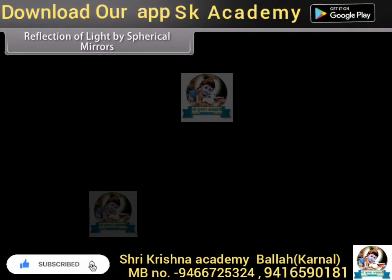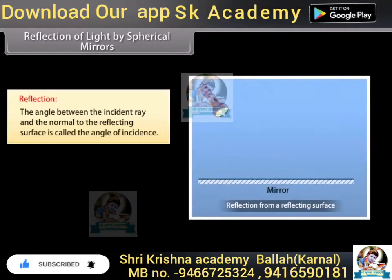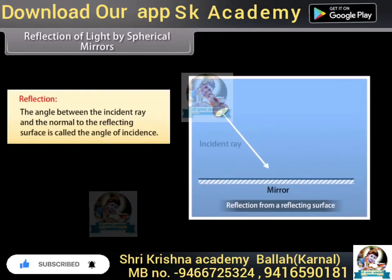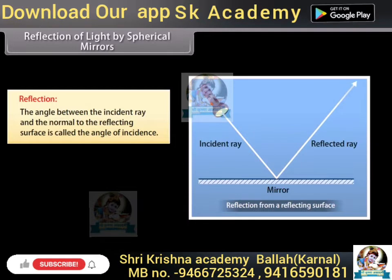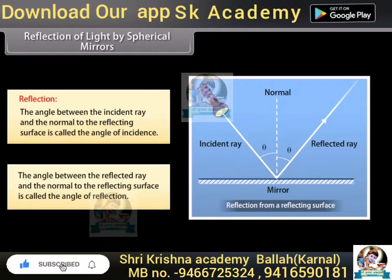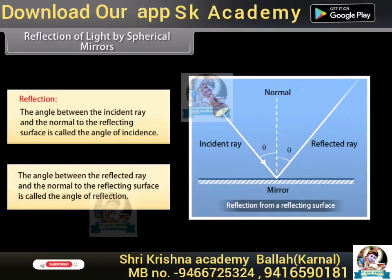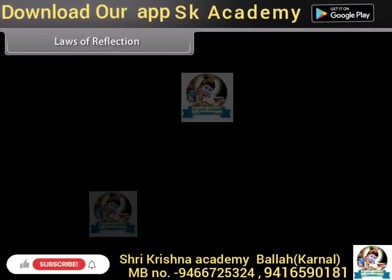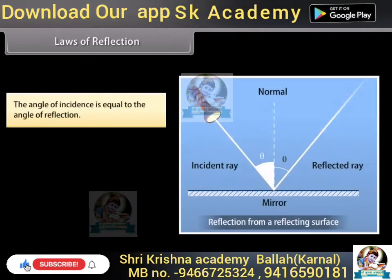Reflection of light by spherical mirrors. The angle between the incident ray and the normal to the reflecting surface is called the angle of incidence. The angle between the reflected ray and the normal to the reflecting surface is called the angle of reflection. The laws of reflection state that the angle of incidence is equal to the angle of reflection.